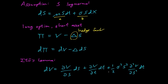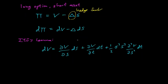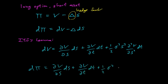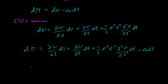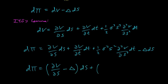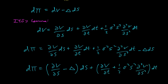Ito's Lemma gives us this formula for dV. Now we write d-pi and expand it out. d-pi equals dV — partial of V with respect to t dt plus one-half times the second derivative term — then minus delta dS. Collecting terms, we get partial of V with respect to S minus delta, times dS, and then the dt terms: partial of V with respect to t plus one-half sigma squared S squared, second partial of V with respect to S.